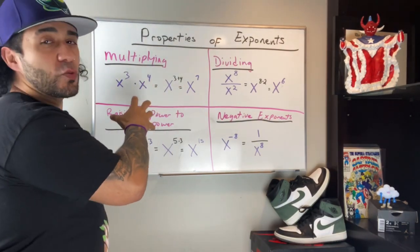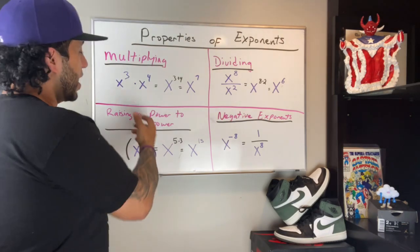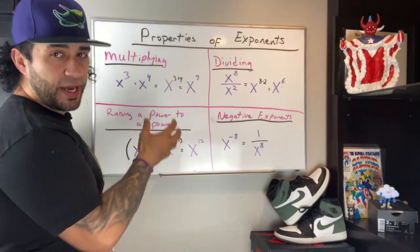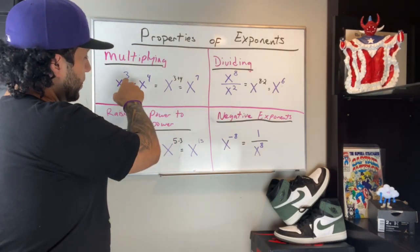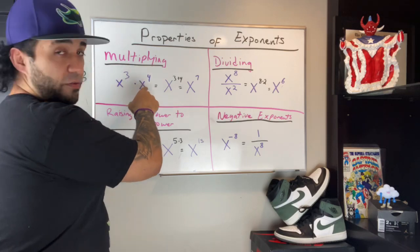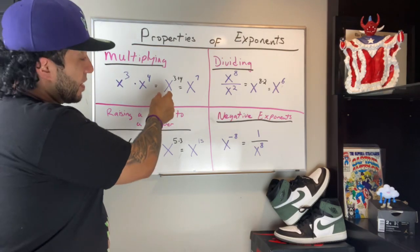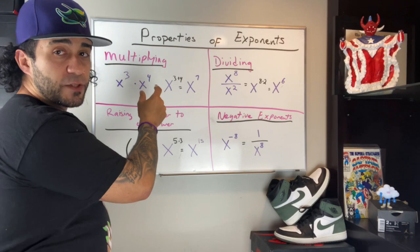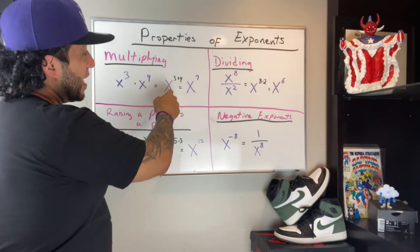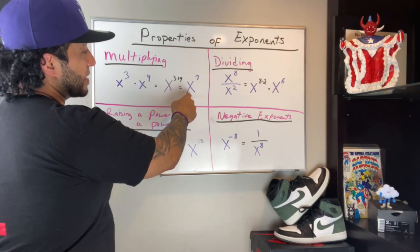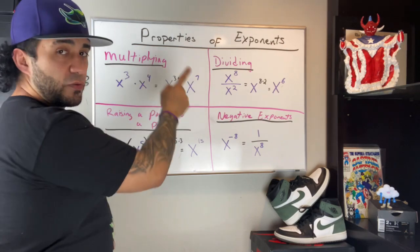Suppose we are talking about the multiplying of exponents. In this instance we have the base of x. We have x to the third power times x to the fourth power. We're going to keep the base of x, we're going to add those two exponents — 3 plus 4 — and the final response will be x to the seventh power. That's what you do if you're multiplying.